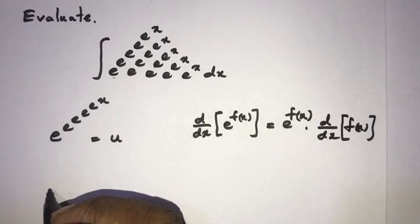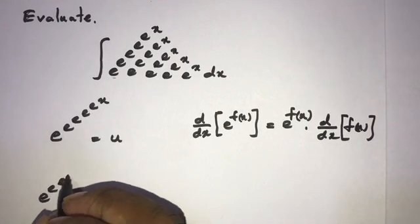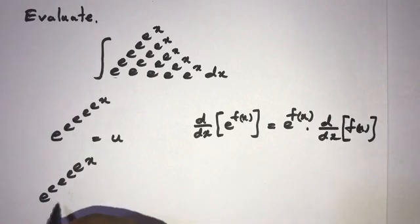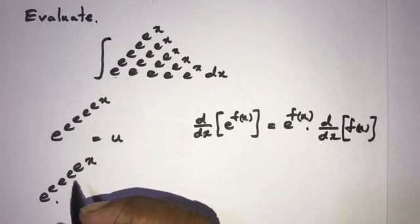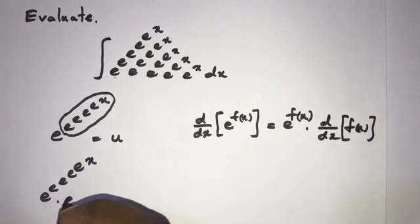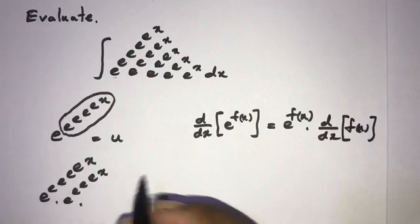By differentiating this with respect to x, we will get some terms. Now according to the chain rule, the derivative of this term times